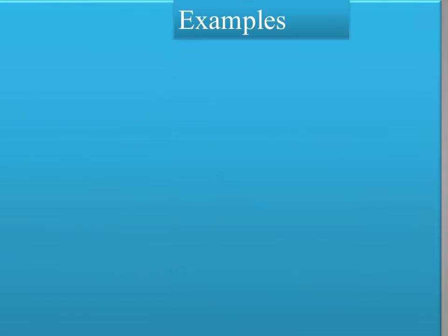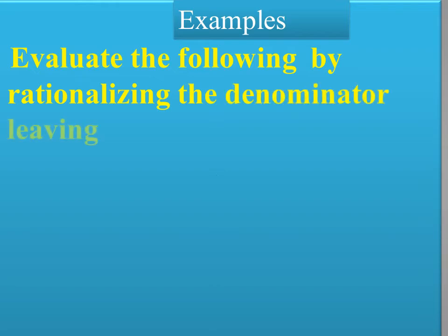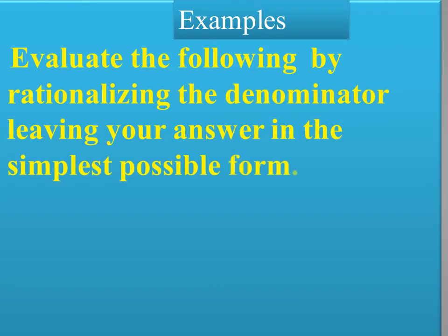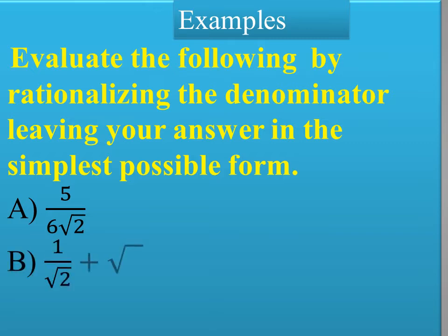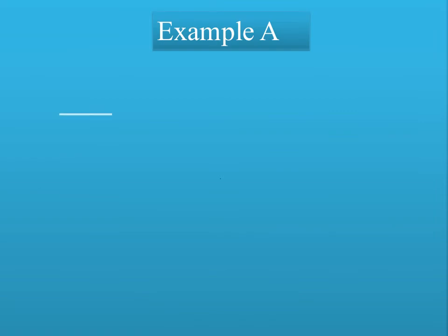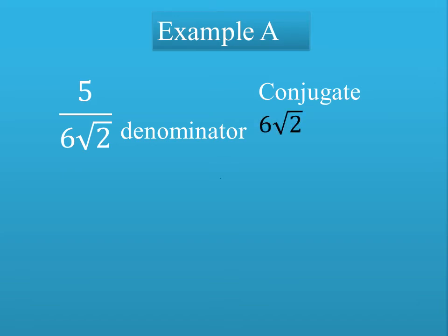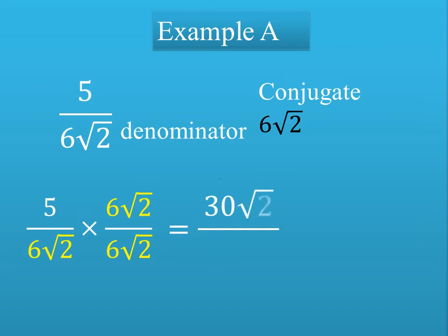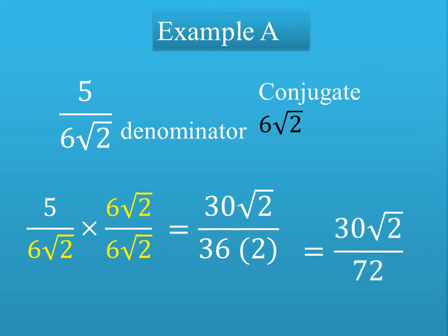Let's look at some examples. Evaluate the following by rationalizing the denominator, leaving your answer in simplest form. Example A: 5 over 6√2, with 6√2 as the denominator. We multiply and divide by the conjugate of the denominator, which is 6√2. This gives us 5/(6√2) × 6√2/(6√2) = 30√2/(36 × 2) = 30√2/72. Simplifying by dividing by 6, we get 5√2/12.